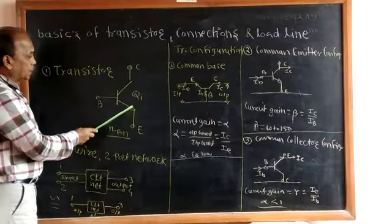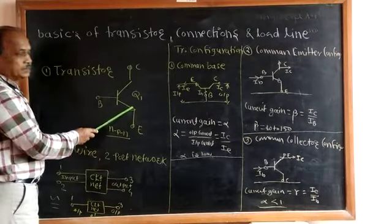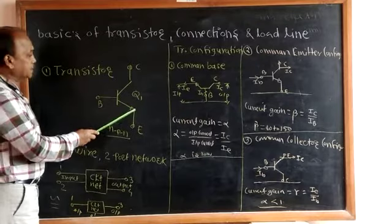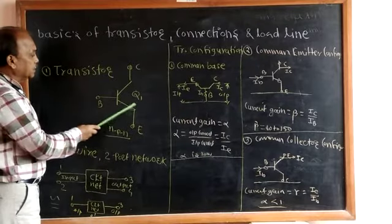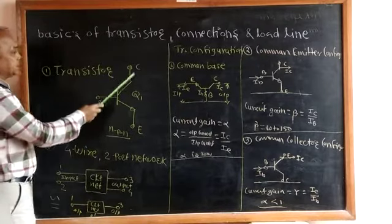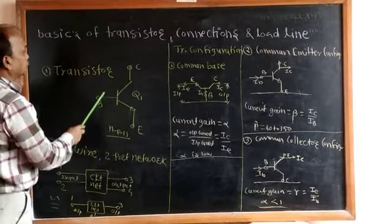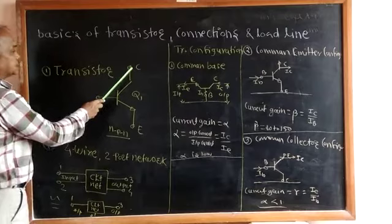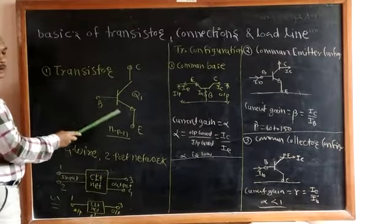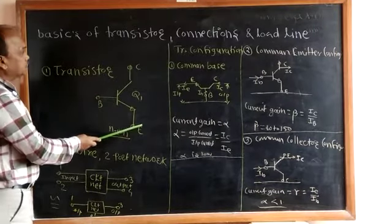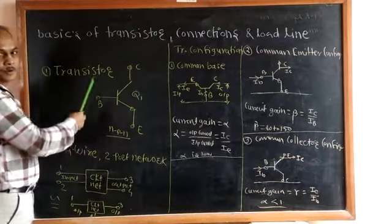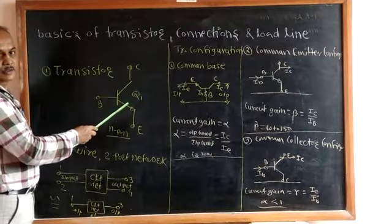This arrow indicates this is an NPN transistor. For a PNP transistor, the arrow is inside. So basically there are three terminals: one is collector, second is base, and third is emitter. This is a low power device — a low power transistor.